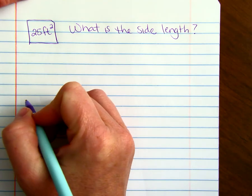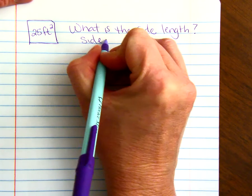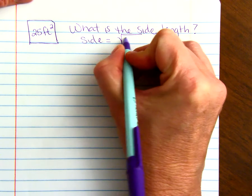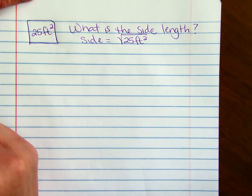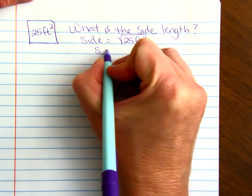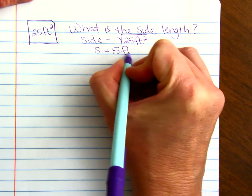The side length is going to equal the square root of whatever the area is. 25 feet squared. So, S, we'll just call that S equals the side length is 5 feet.